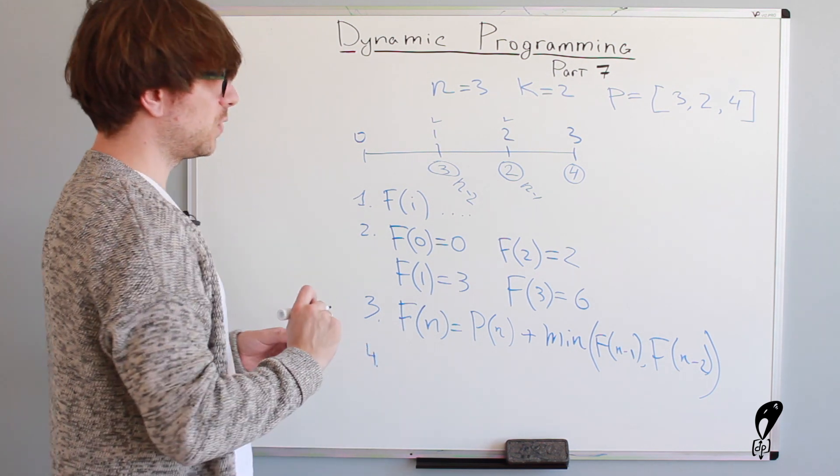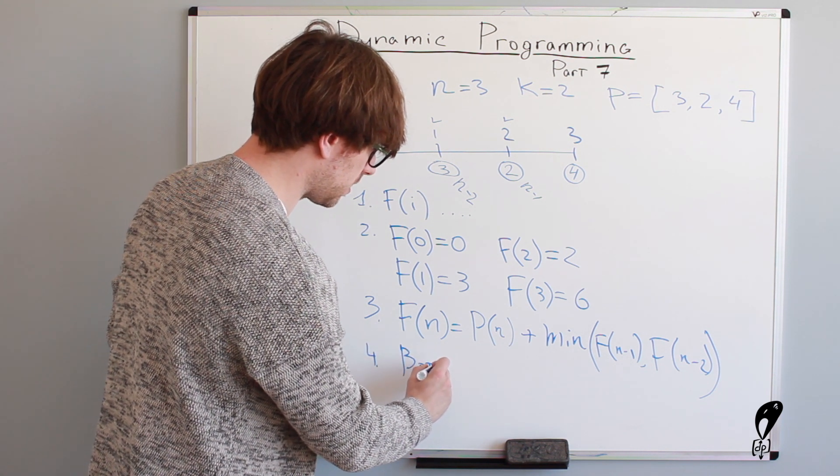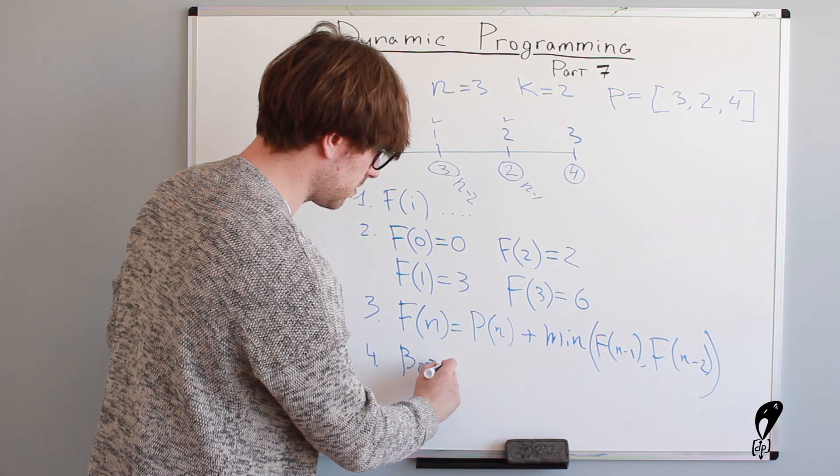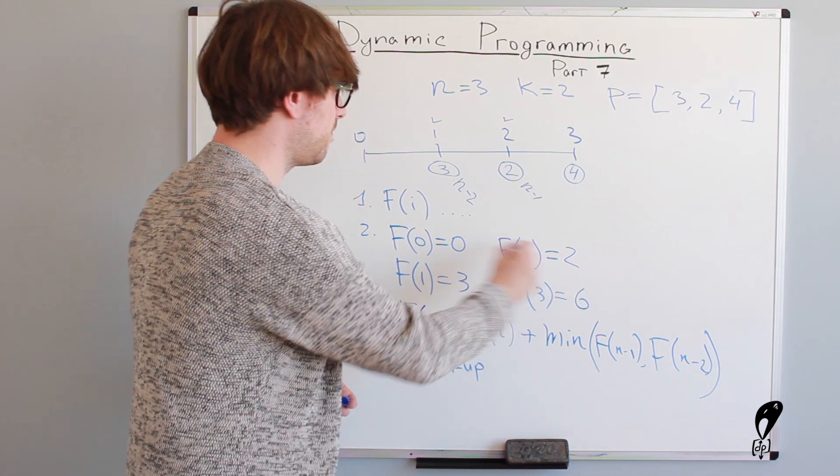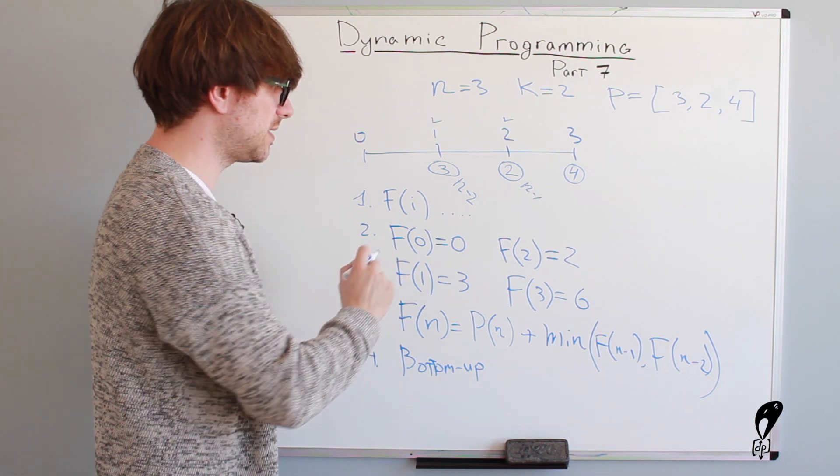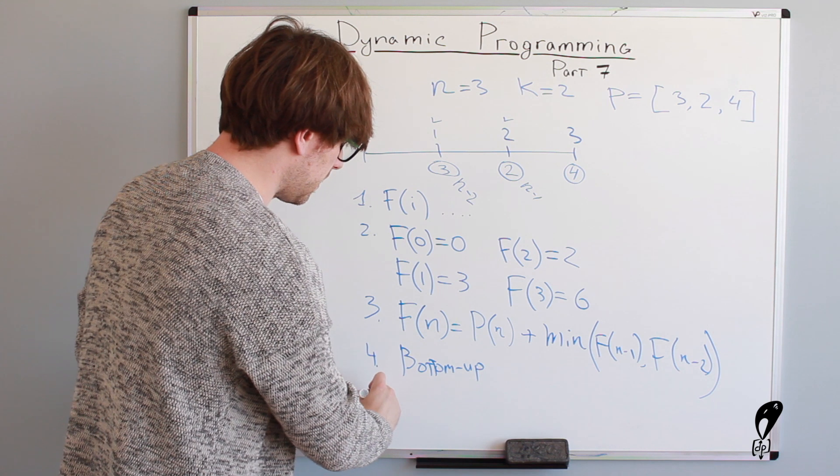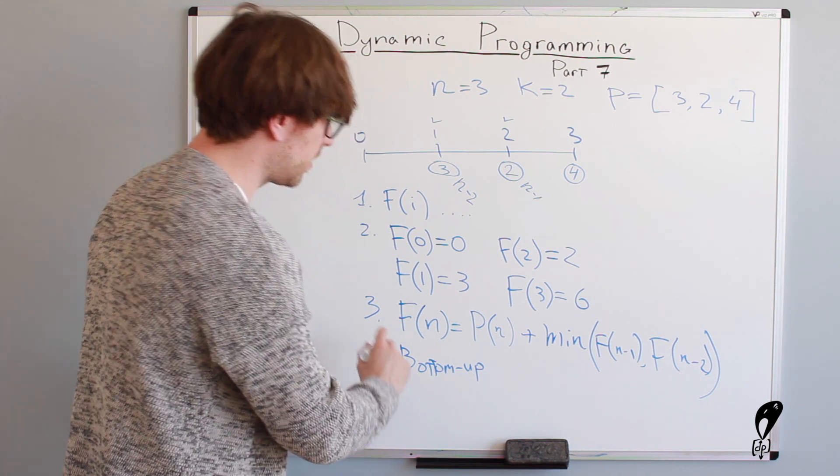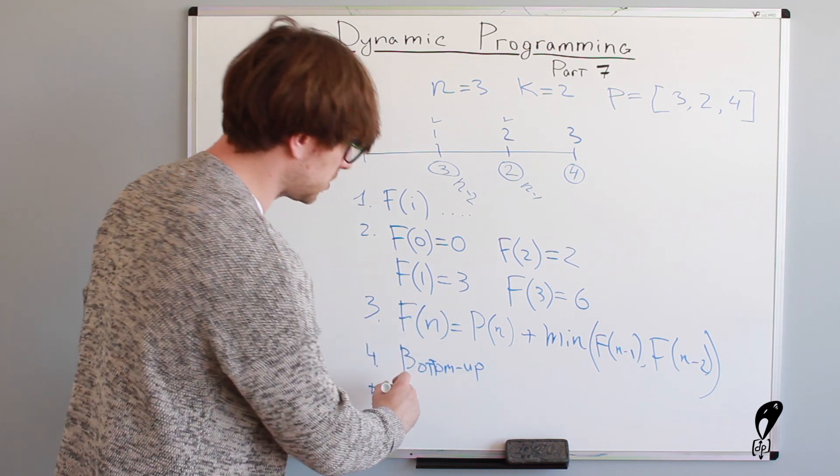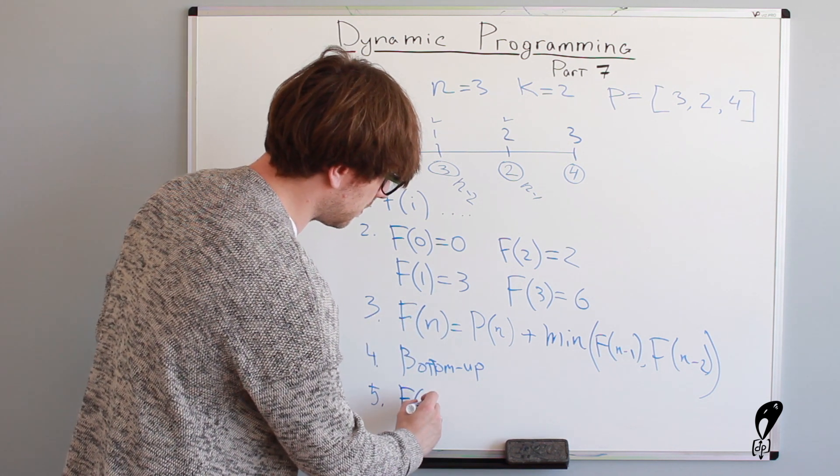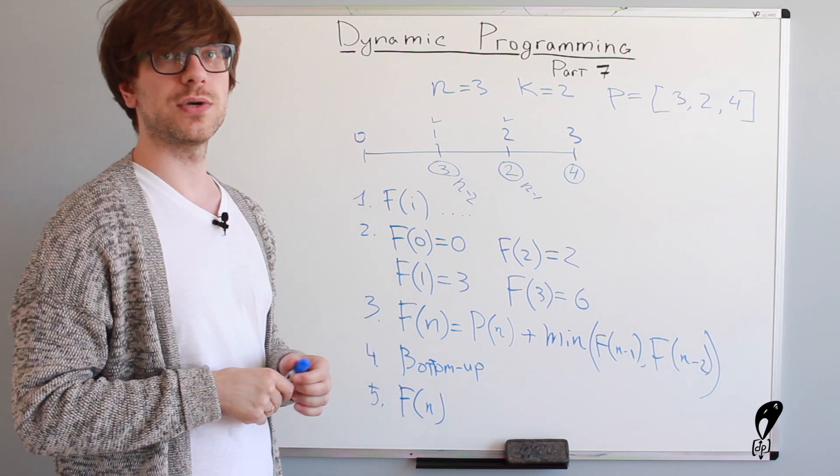And four, in which order we're going to solve this problem? Bottom up, because we already have base cases here. And by using this base case, we're going to go up, up to the n. And then five, where to look for the answer, it's going to be in the last operation, which is f of n. Now let's try to code it up and see how this whole thing looks in code.